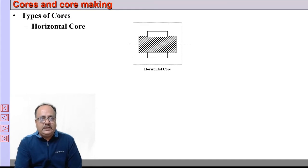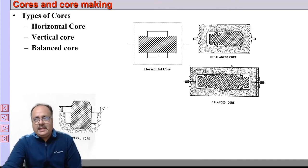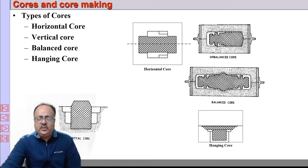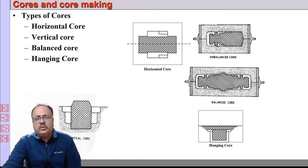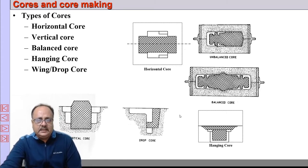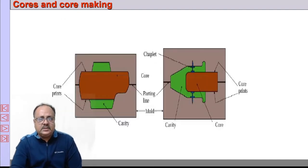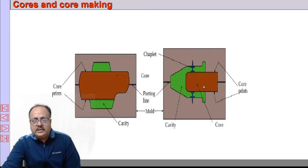Depending on position and how the cores are fitted, we can classify cores into different categories. We have horizontal cores placed horizontally, vertical cores placed vertically, balanced cores balanced on both sides, hanging cores hanging from the top using a wire, and unbalanced or wing cores placed from one side — also called drop cores.